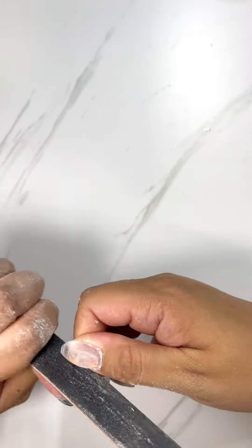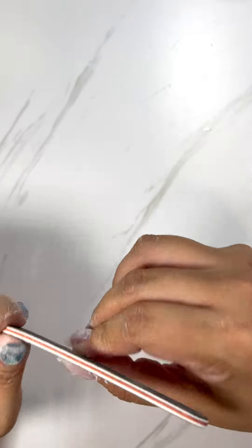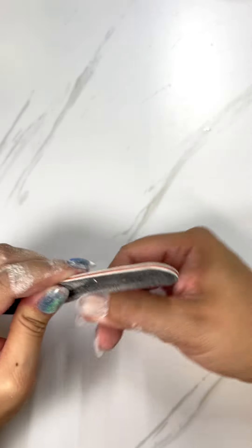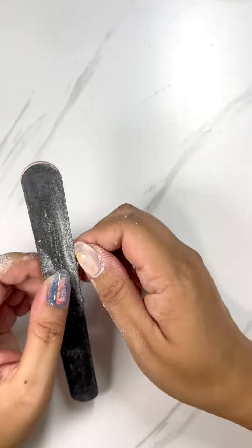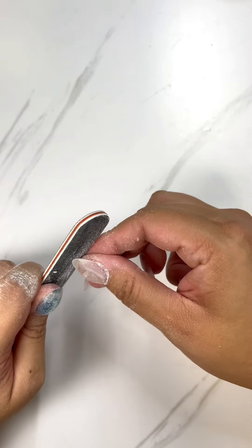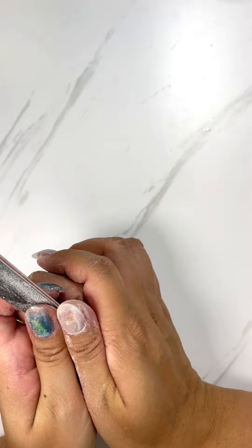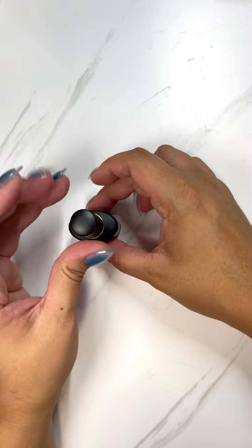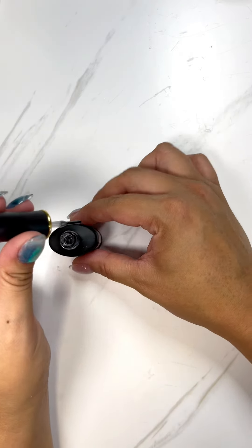Then I went in with my nail file. I used a coarse nail file here to fine-tune the shape. I went for a short round almond kind of shape. I then washed my hands and applied this Born Pretty super topcoat.